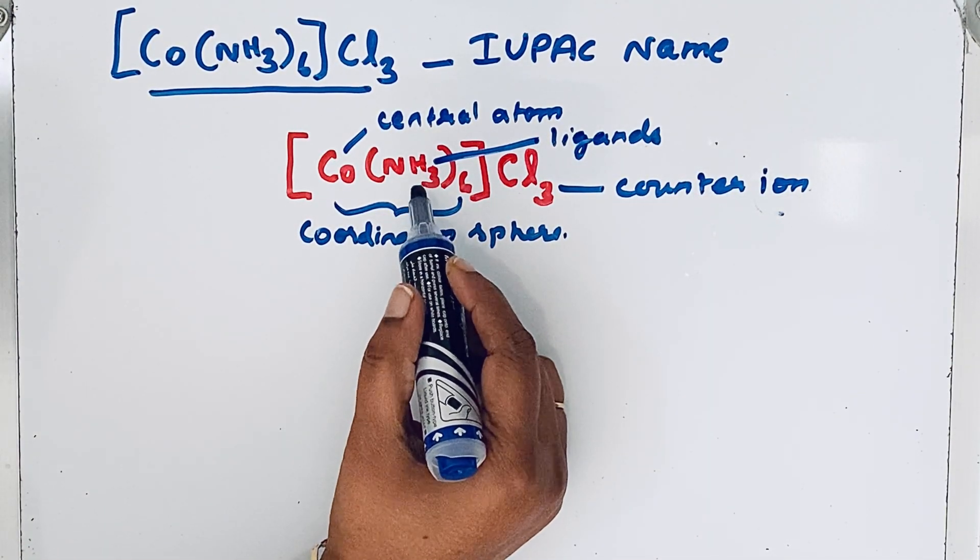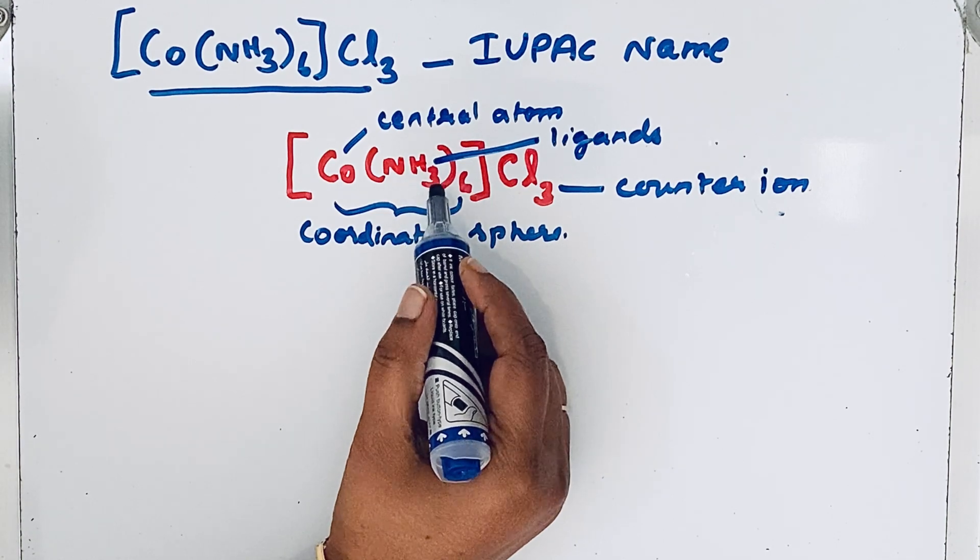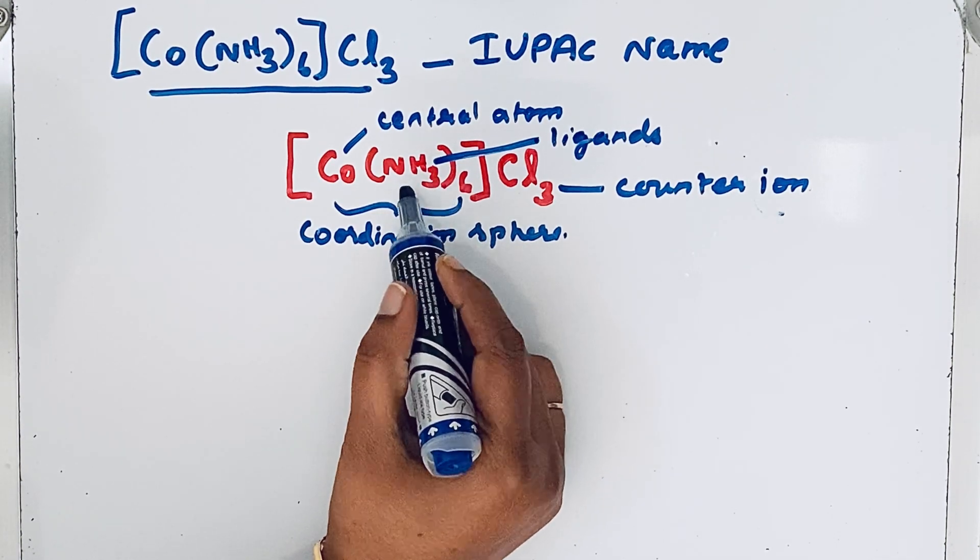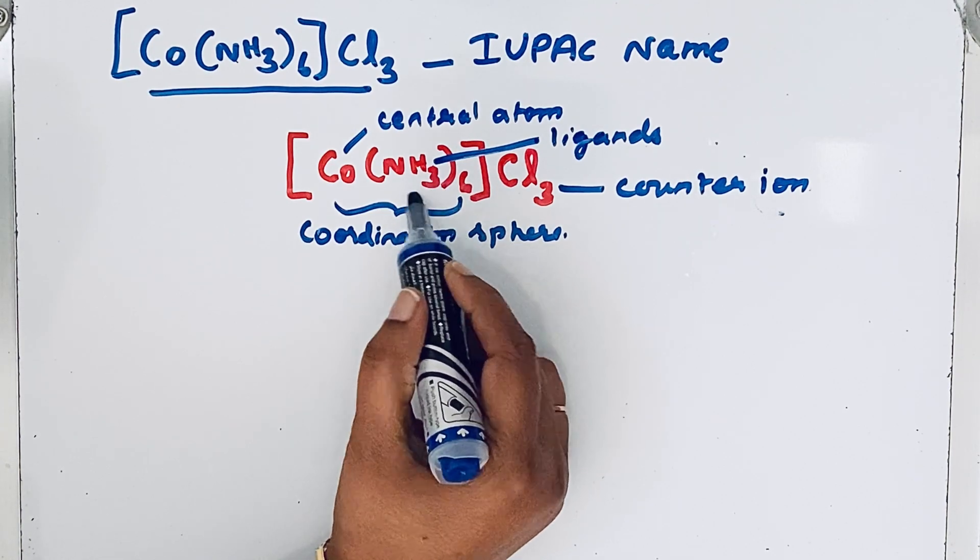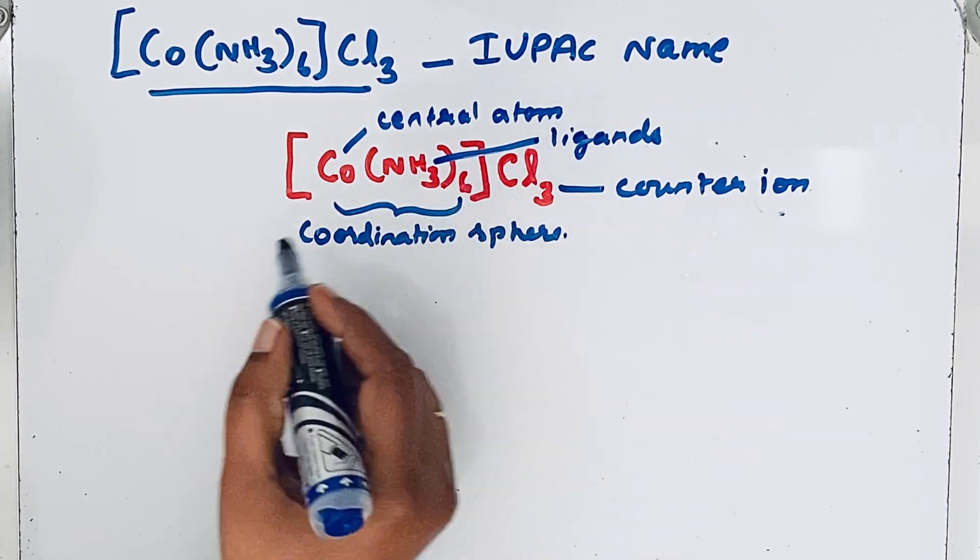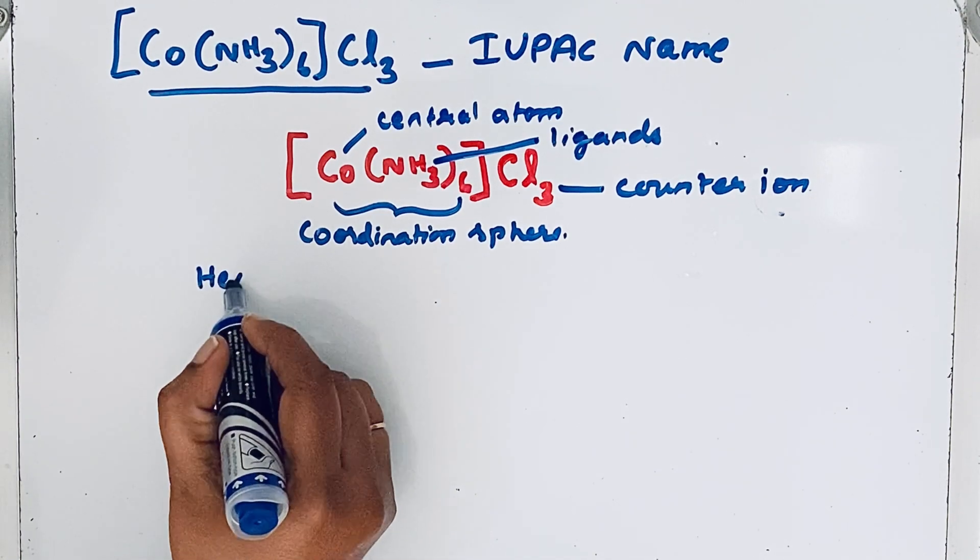According to the rule, first we should write the ligands. Here, six amines - the ligands are amine NH3. There are six amines present, so we call them hexaamine.